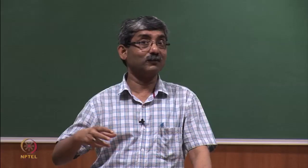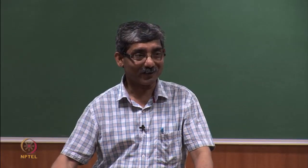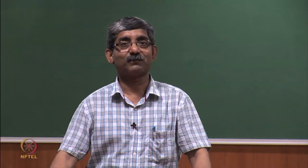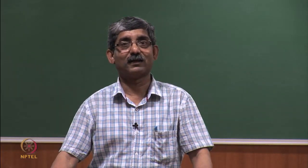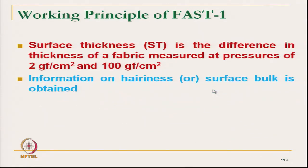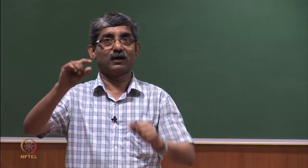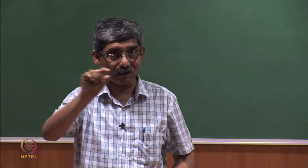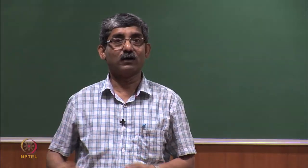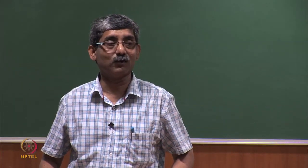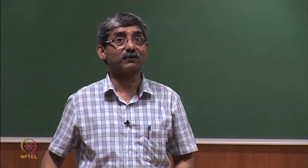We can also get an idea of prickle sensation from the St value — this is surface thickness. So from the difference in thickness measured at 2 different pressures, information on hairiness or surface bulk is obtained. A fabric may be soft at the surface and hard at the core, and that way we can get an idea by measuring the surface thickness.